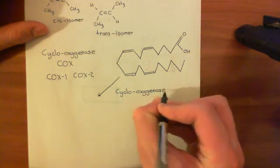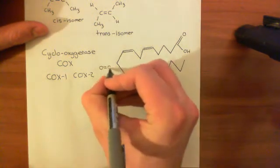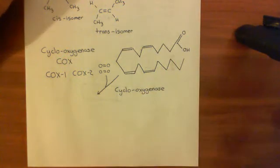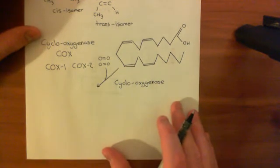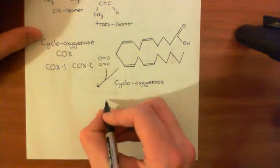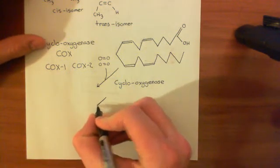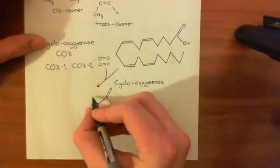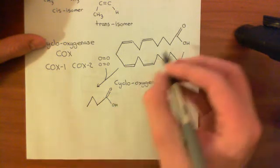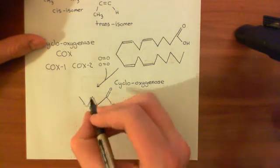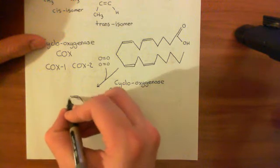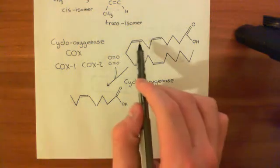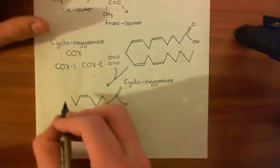The first reaction that happens is what's known as the cyclooxygenase reaction. In the cyclooxygenase reaction, you're going to bring in two oxygen molecules, and you're going to modify your arachidonic acid molecule. The carboxylic acid group remains pretty much the same. This double bond here is still there — the double bond of the fifth carbon to the sixth to the seventh — and you still go up to the eighth. But now things start to change: you're going to cleave these two double bonds here.